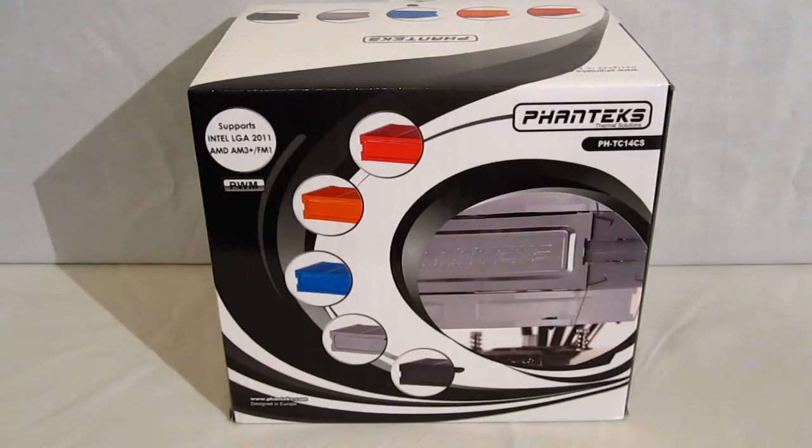It comes packed in the standard Phanteks packaging which features the swirl design with just a hint of the cooler in the center of the swirl. Taking a look at the sides of the swirl we see that we've got the different colors that the unit is available in: red, orange, blue, silver, and now black. Black was previously unavailable in the Phanteks line, so it is a new color in the line.